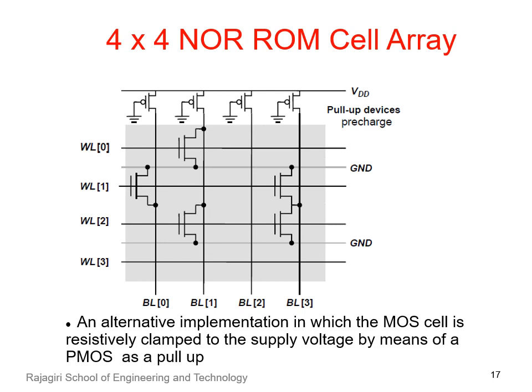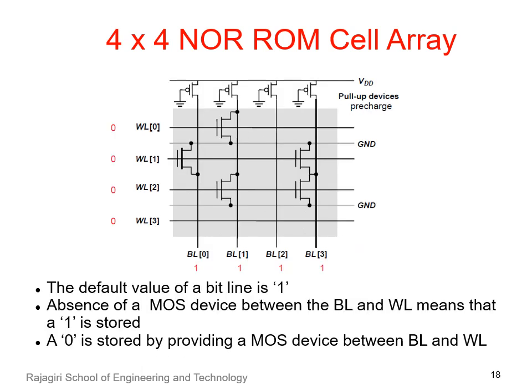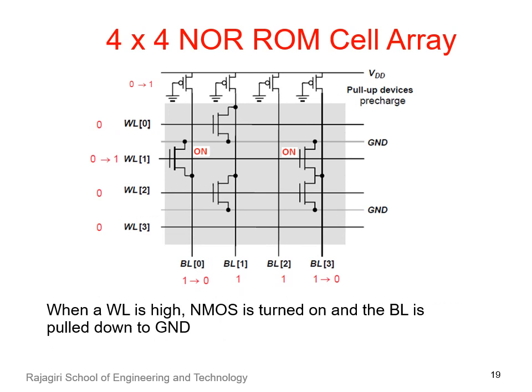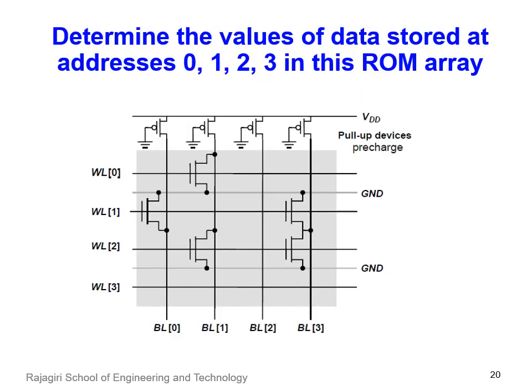Now, this is an implementation of the ROM cell array in which the MOS is resistively clamped to the supply voltage by means of PMOS as a pull-up. So the default value of a bit line is 1 in this case. Absence of a MOS device between the bit line and word line means that a 1 is stored, and a 0 is stored by providing a MOS device between the bit line and word line. So when a word line is high, the NMOS is turned on and the bit line is pulled down to ground. Again, there is a question to determine the values of data stored at addresses 0, 1, 2, and 3 in this ROM array, which is of NOR logic.